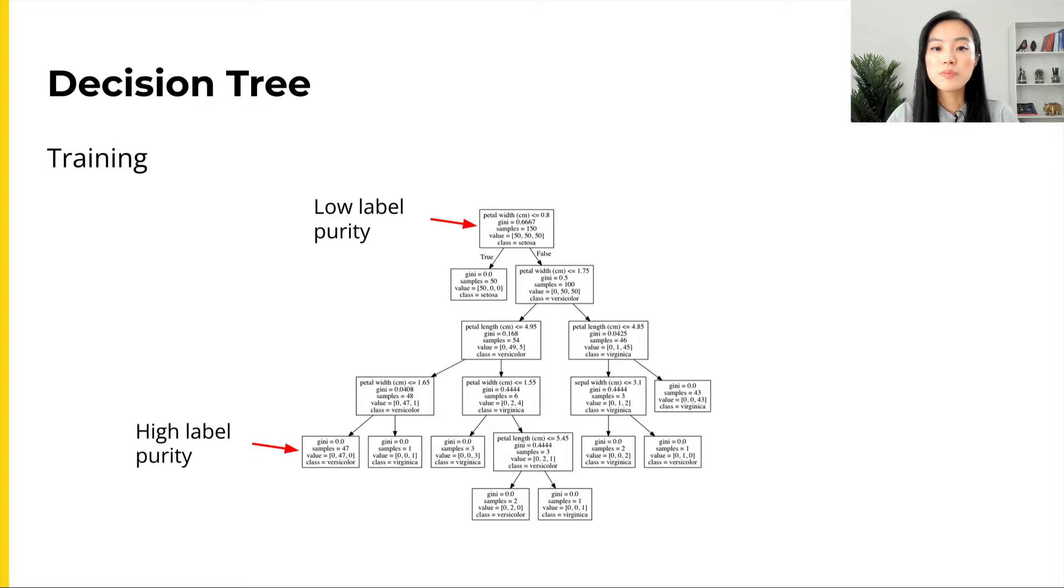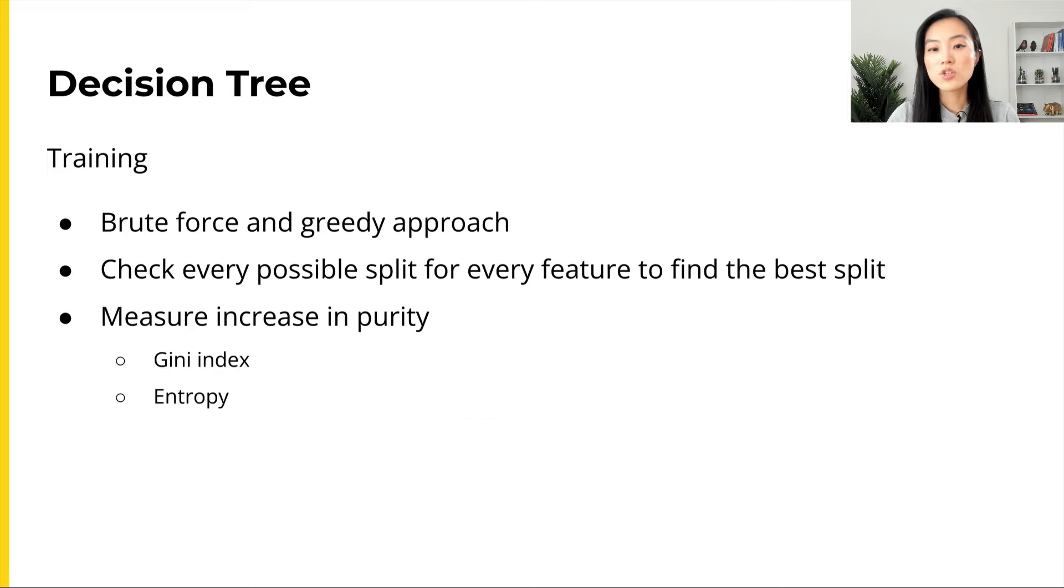To make a split, the decision tree model takes a brute force and greedy approach. The algorithm scans through all possible splits for every feature and finds the best split of the data. To determine which one is better, we use purity measurement, usually Gini index or entropy.